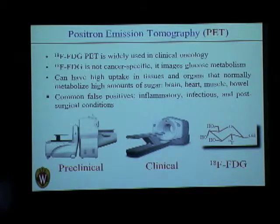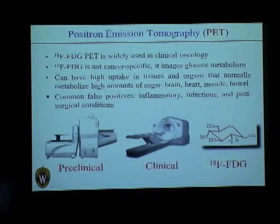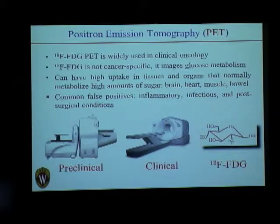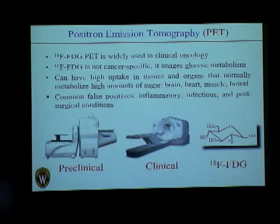Currently in clinical oncology, PET uses fluorodeoxyglucose (FDG), which is a glucose molecule bound to radiolabeled fluorine-18, as you can see here. This radiotracer is injected intravenously into the body, where the fluorine slowly emits positrons that annihilate with electrons and release gamma rays which can be detected. This is how tumors and disease can be imaged.